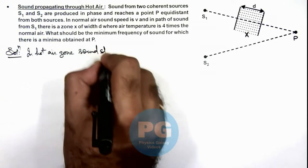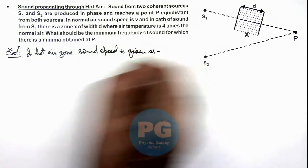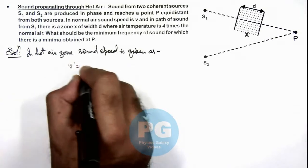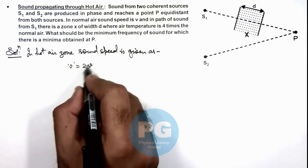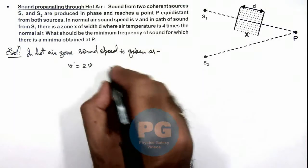This we can write as v' which is twice the velocity of sound in air, because we are given that we can write temperature of hot air as 4 times the temperature of normal air.